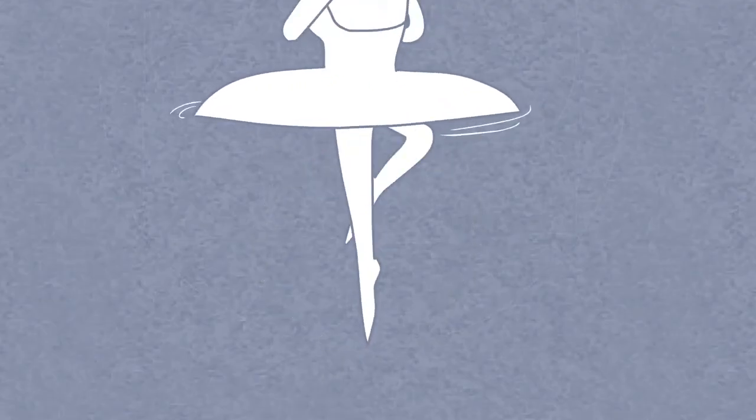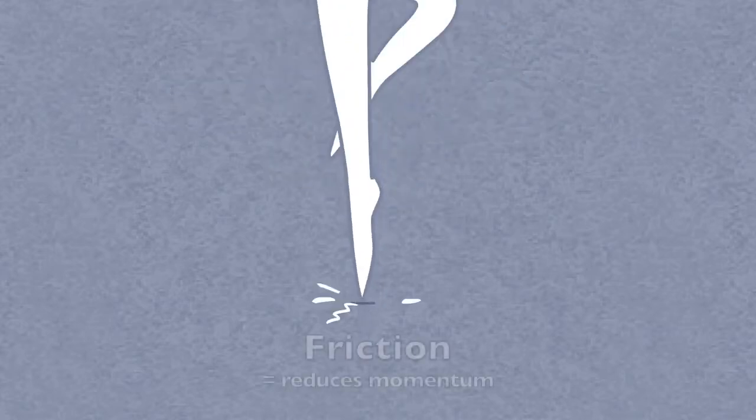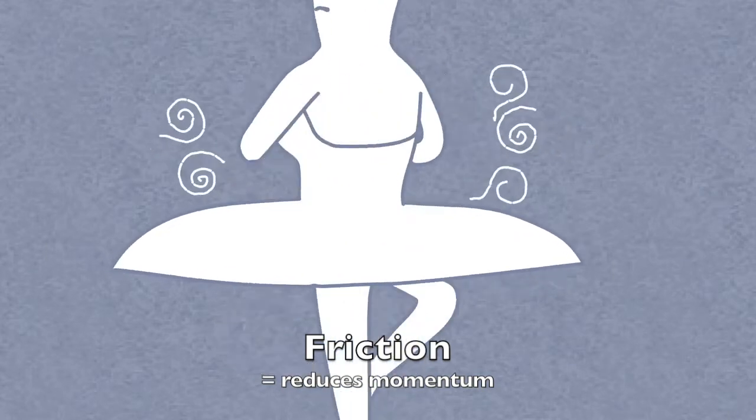Maintaining the rotation is the most challenging part as there will be friction between the shoe and the floor and air resistance acting on her body. This reduces the momentum of the turn. So how is it possible to keep spinning without stopping?